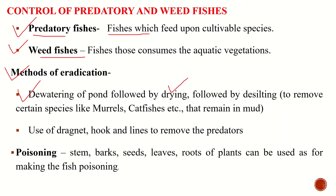This is a useful and successful method in the eradication of unwanted fishes, but it can only be used in small culturable ponds. In the case of heavily silted ponds, desilting after dewatering becomes necessary, because certain species like murrels, catfishes, and muddy eels remain alive even deep in the mud. Hence, desilting assists in the removal of these fishes. Dewatering is suggested in summer when the water depth goes down to a minimum.